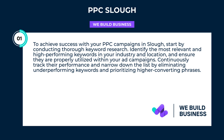To achieve success with your PPC campaigns in Slough, start by conducting thorough keyword research. Identify the most relevant and high-performing keywords in your industry and location, and ensure they are properly utilized within your ad campaigns. Continuously track their performance and narrow down the list by eliminating underperforming keywords and prioritizing higher converting phrases.